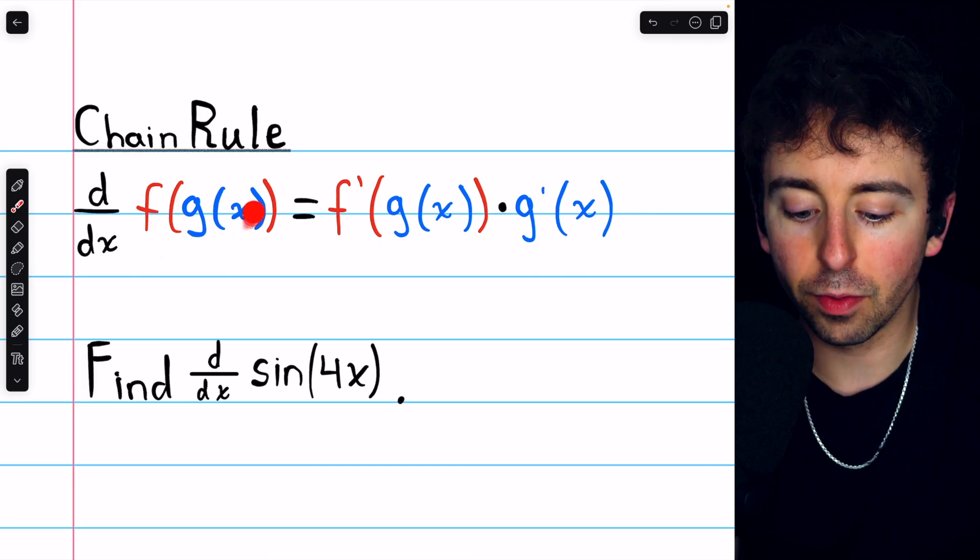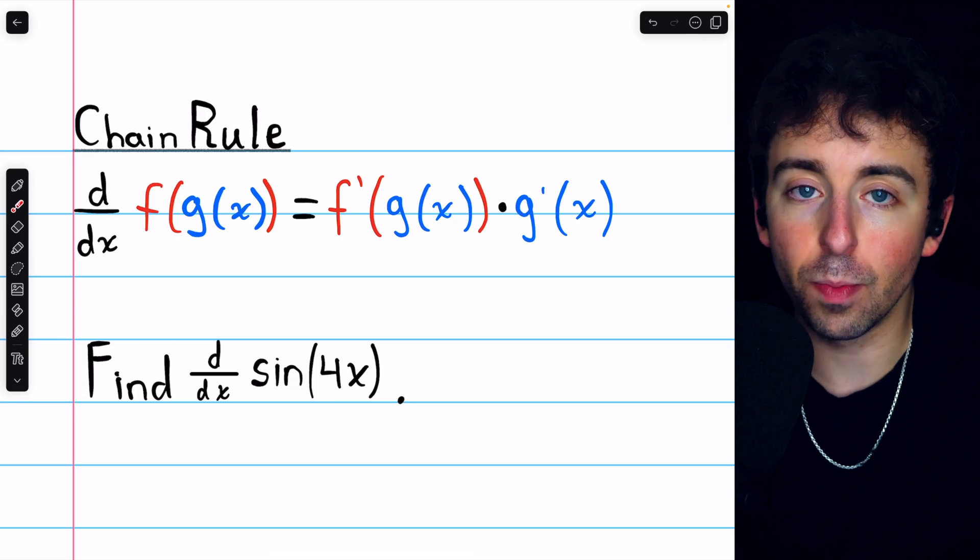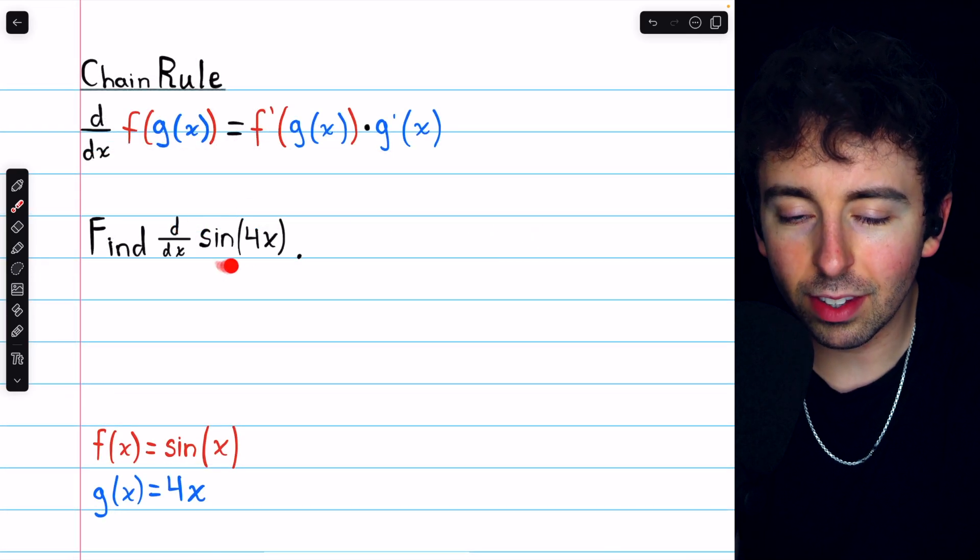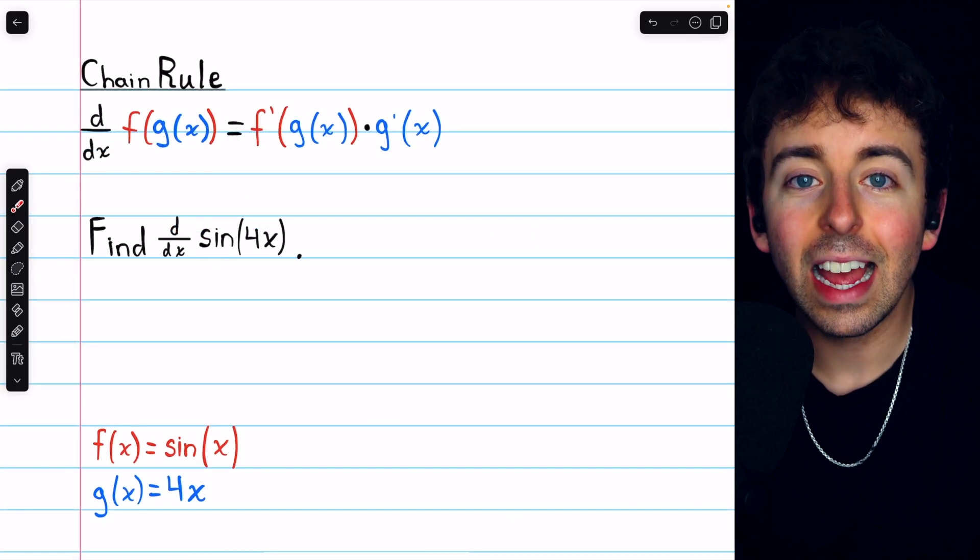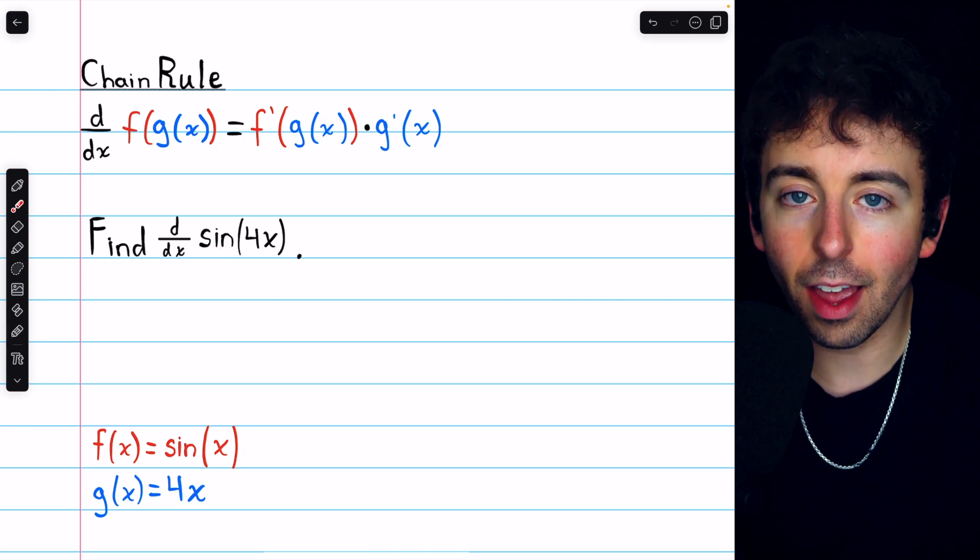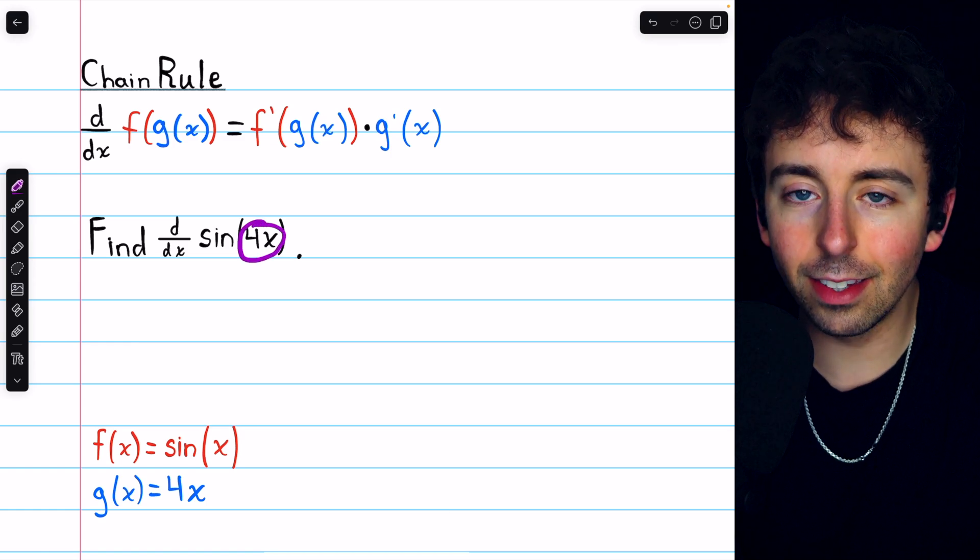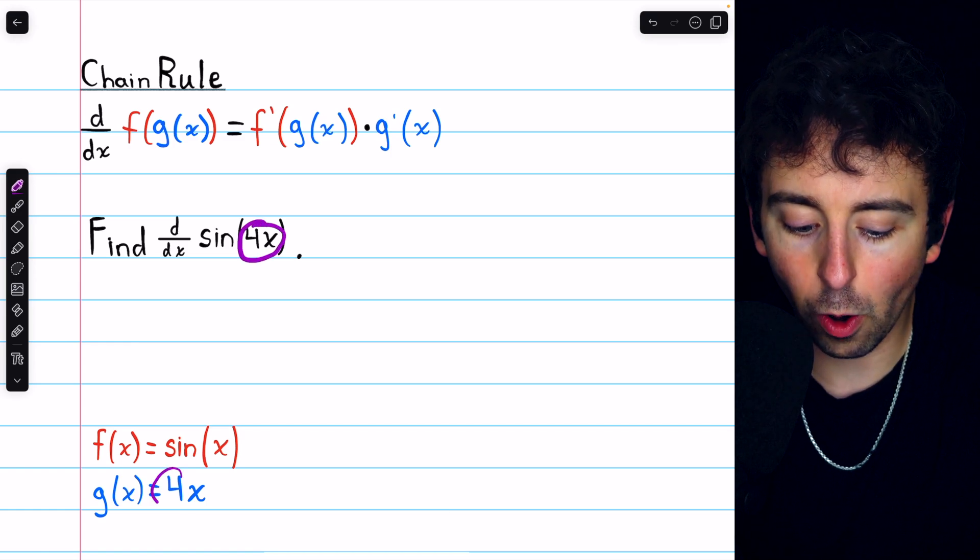The derivative of f of g is f prime of g times g prime. In our case with sine of 4x, f of x, the outside function, is the sine function. And then, of course, g of x, the inside function, is 4x.